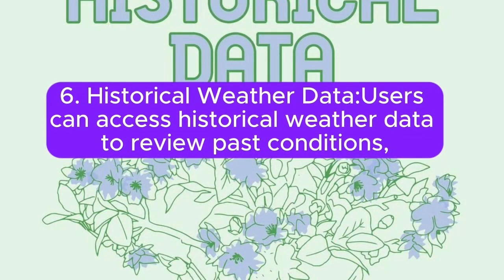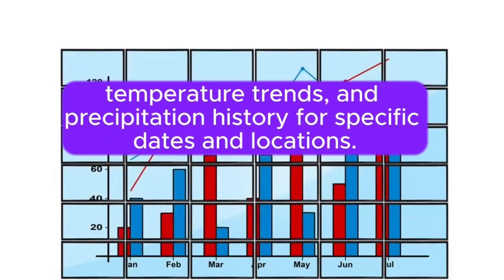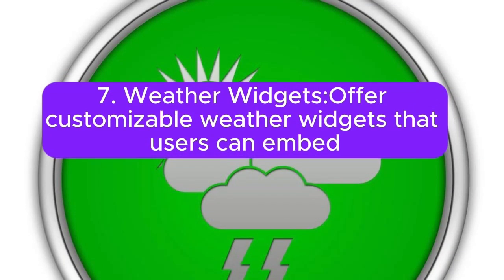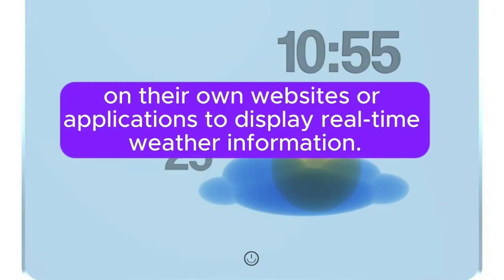6. Historical weather data: users can access historical weather data to review past conditions, temperature trends, and precipitation history for specific dates and locations. 7. Weather widgets: offer customizable weather widgets that users can embed on their own websites or applications to display real-time weather information.